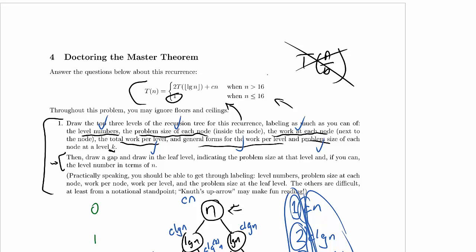The base case is no problem. We've got constant base cases for n less than or equal to 16. That's all we need from the base case for the master theorem to apply.